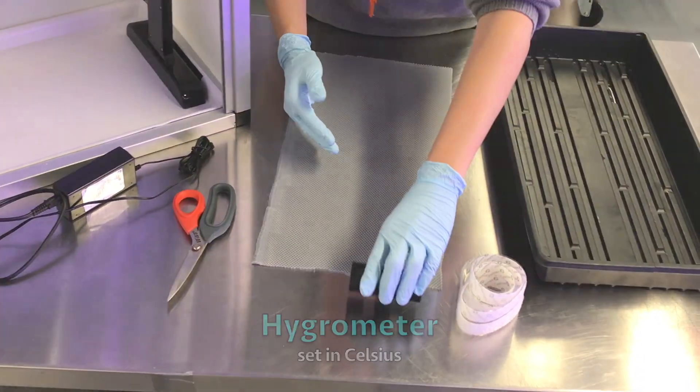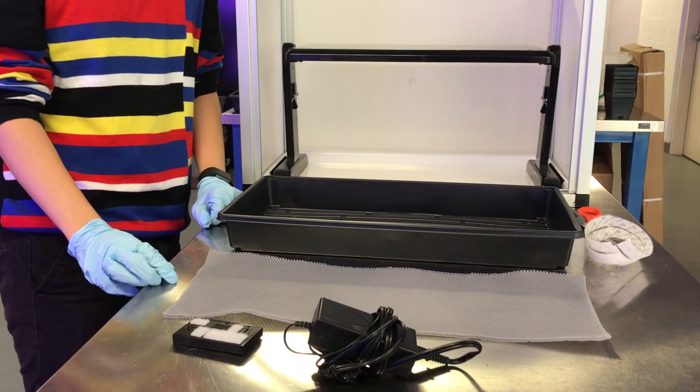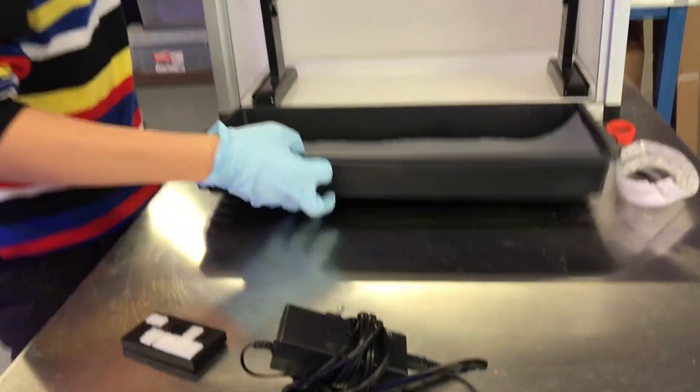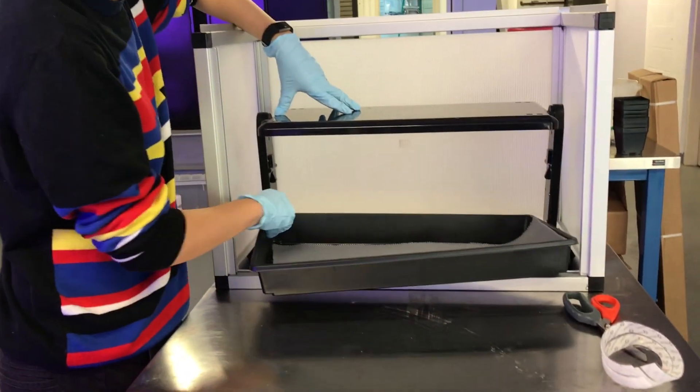Finally, a hygrometer. Make sure to have it in Celsius. Place the wick fabric material on the tray and place the tray in the box under the LED lights.